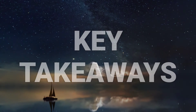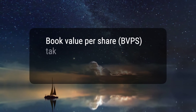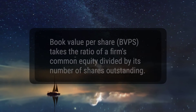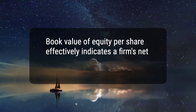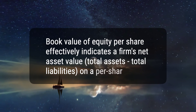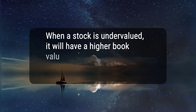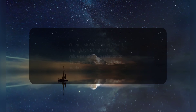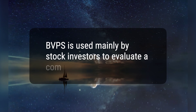Here are four key takeaways. 1. Book value per share, BVPS, takes the ratio of a firm's common equity divided by its number of shares outstanding. 2. Book value of equity per share effectively indicates a firm's net asset value — total assets minus total liabilities — on a per share basis. 3. When a stock is undervalued, it will have a higher book value per share in relation to its current stock price in the market. 4. BVPS is used mainly by stock investors to evaluate a company's stock price.